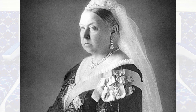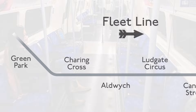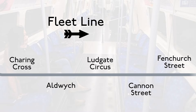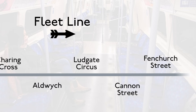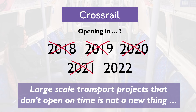Talking of royal names, the Jubilee Line was scheduled to open in 1977 and was originally going to be the Fleet Line, as the eastern part was due to run north of the Thames and along under Fleet Street. But politicians argued to have it renamed to coincide with the Queen's Jubilee in 1977, which they successfully managed to do, but then the opening was delayed and didn't happen until 1979 — two years after the Queen's Silver Jubilee.